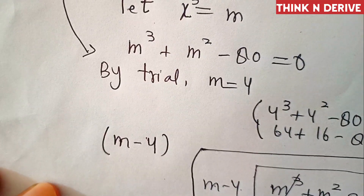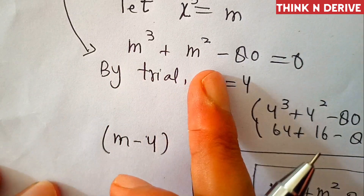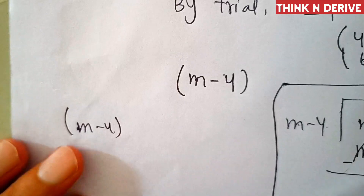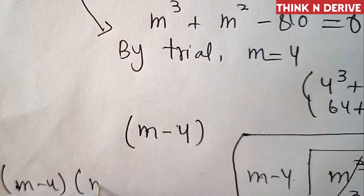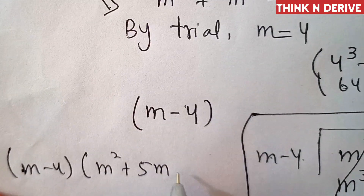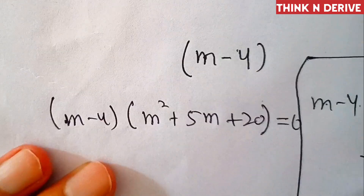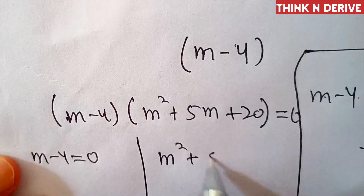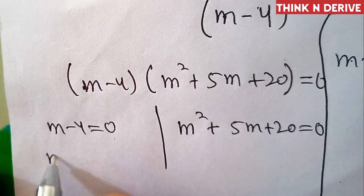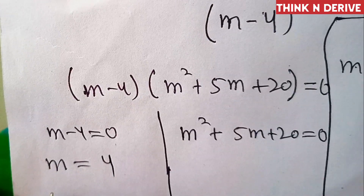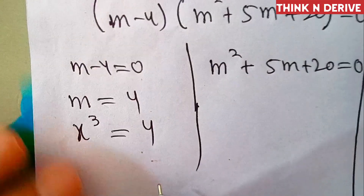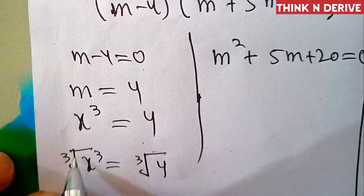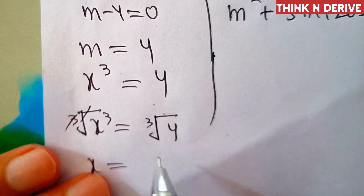By the divisibility rule, dividend equals divisor into quotient plus remainder. So m cube plus m square minus 80 can be written as m minus 4 into m square plus 5m plus 20. These are two factors: either m minus 4 equal to 0, giving m equal to 4, or m square plus 5m plus 20 equal to 0. Since m equal to x cube, we get x cube equal to 4. Applying cube root on both sides, x equals cube root of 4.